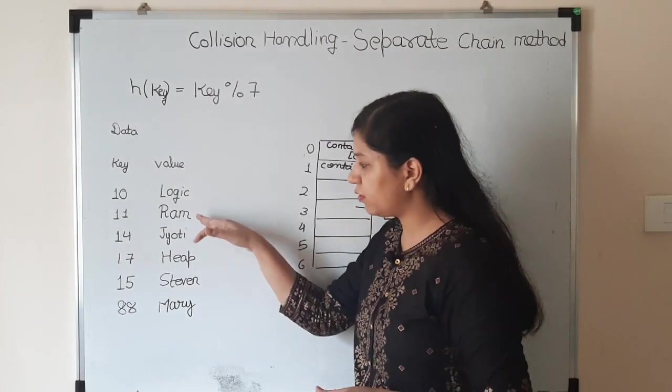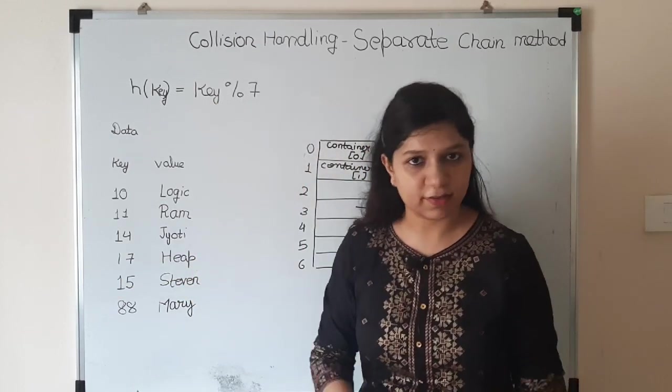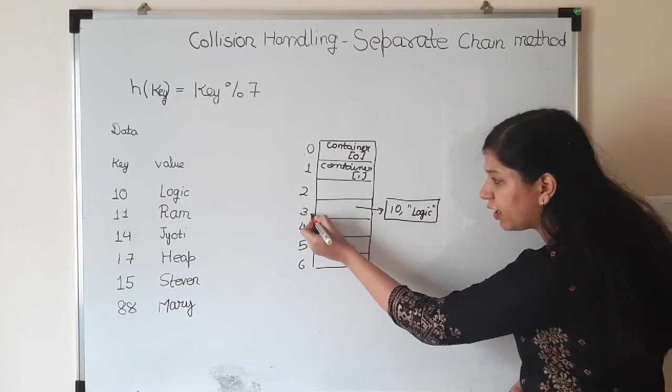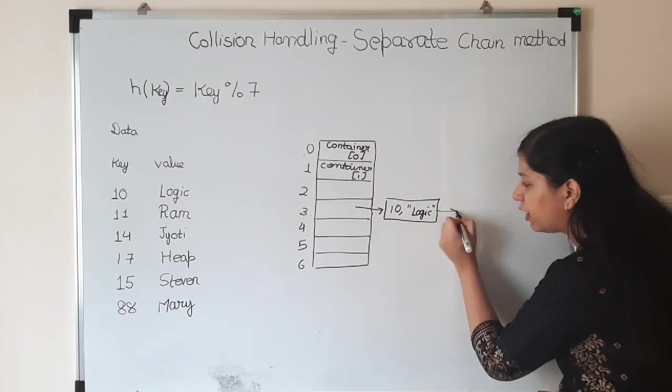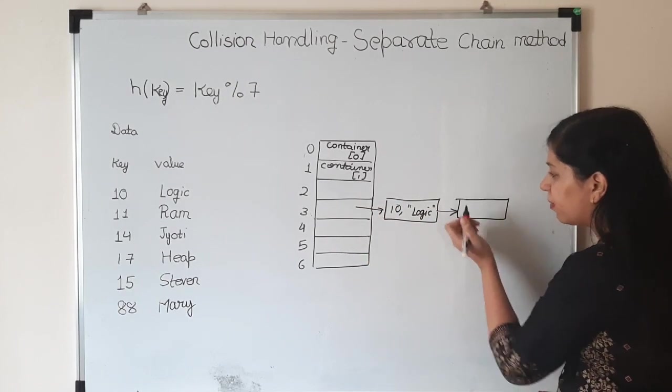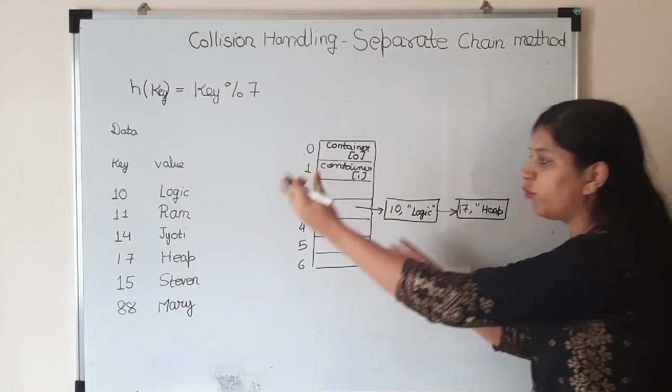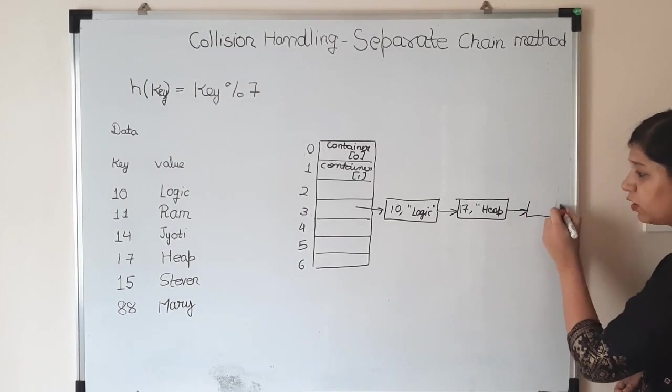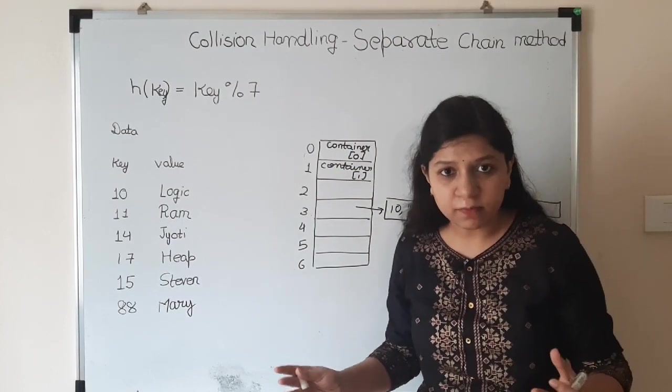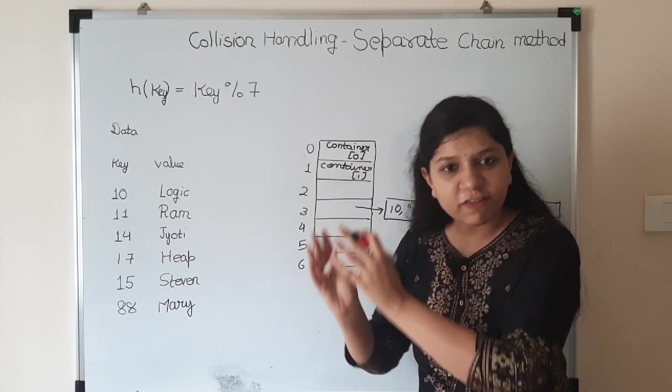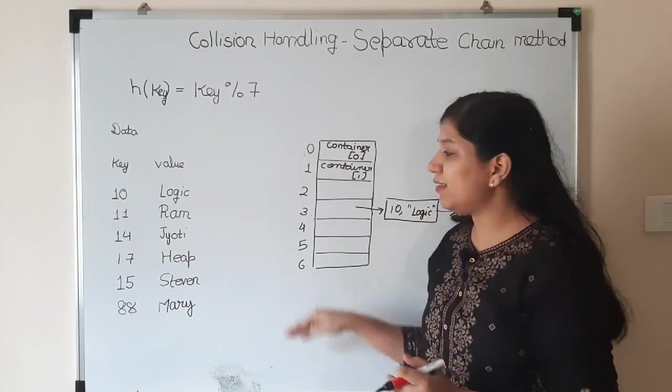Next we'll come to 17 Heap. 17 modulo 7 is 3, so again we come to the same hash at index 3. In this list we'll append one more value which is 17 Heap. If one more value comes, we'll insert here. At each place we call it a bucket or container, where we can insert all those key value pairs which hash to the same index.